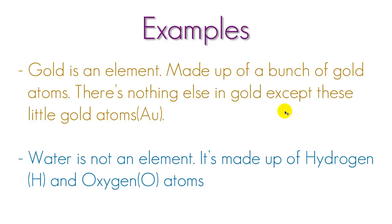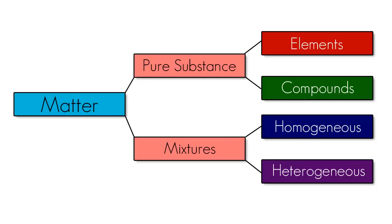So some things, like gold, are pure substances made up of all the same atoms. However, other things — called compounds — are made up of two or more different types of atoms. Looking at our graph, we can see that the two types of pure substances are elements, made up of all the same atom, and compounds, made up of different types of atoms.